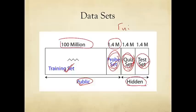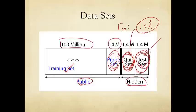You can submit your algorithm up to one time a day to the quiz set. There's a submission limit because if you submit too many times — say every 50 seconds — you might gain enough hints to reverse engineer the ground truth, which wouldn't be useful for Netflix. Once a team achieves 10% improvement over Cinematch RMSE on the quiz set, it enters the final last call phase, and the final result is based on RMSE performance on the test set. So: use the training set to train, probe set to test yourself, quiz set to validate periodically, and the eventual result is on the test set.